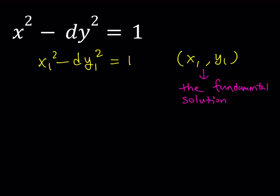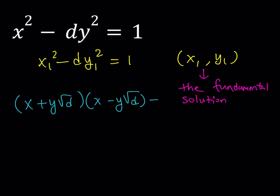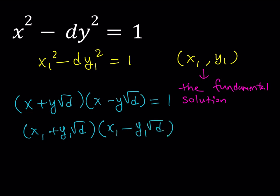How are we going to factor it? We can write x squared minus dy squared as the product (x plus y√d)(x minus y√d) — from the difference of two squares, we obviously get x squared minus dy squared. In other words, this is going to be the field of Z[√d]. Since x1, y1 is a solution, we replace x with x1 and y with y1, giving the factorization: (x1 plus y1√d)(x1 minus y1√d) equals 1. Caution — there's going to be a lot of algebra and theory ahead.